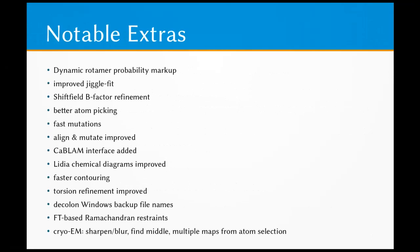Notable extras — each of these could have its own five-minute slide. Perhaps the thing to note here is that Kevin has added shift field B factor refinement. He's given me a function to add that, so one can now do B factor refinement in Coot quite rapidly.